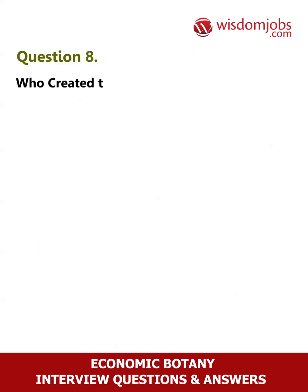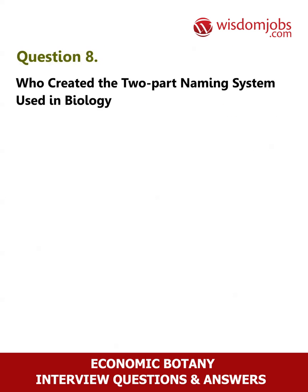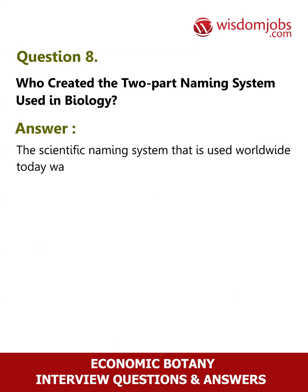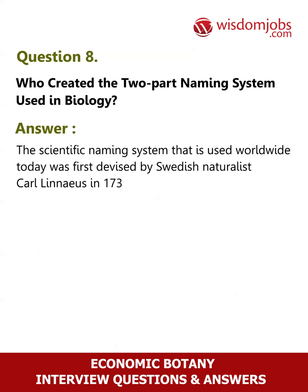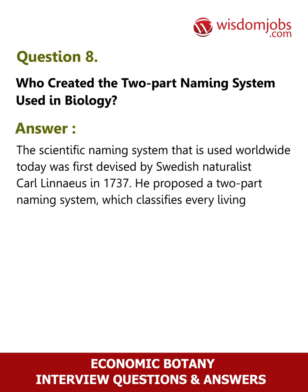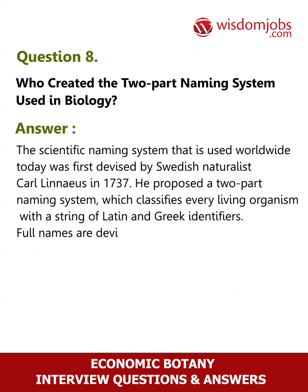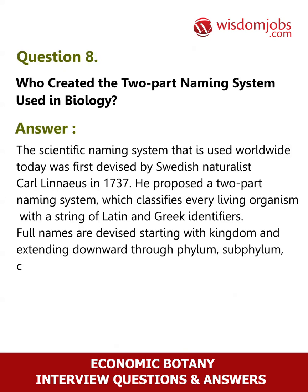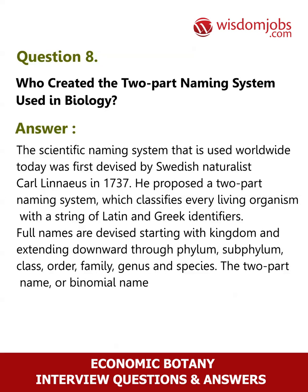Question 8: Who created the two-part naming system used in biology? Answer: The scientific naming system used worldwide today was first devised by Swedish naturalist Karl Linnaeus in 1737. He proposed a two-part naming system which classifies every living organism with a string of Latin and Greek identifiers. Full names are devised starting with kingdom and extending downward through phylum, subphylum, class, order, family, genus, and species. The two-part or binomial name consists of the genus and species.